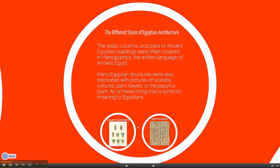Let's talk about the different styles of Egyptian architecture. The walls, columns, and piers of ancient Egyptian buildings were often covered in hieroglyphics, which was the written language of ancient Egypt. Many Egyptian structures were also decorated with pictures of scarabs, vultures, palm leaves, or the papyrus plant. All of these things had a symbolic meaning to Egyptians.